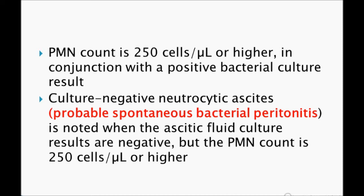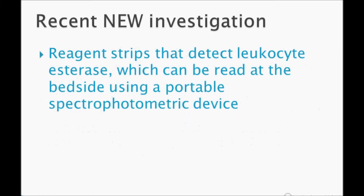There is a definition called 'probable spontaneous bacterial peritonitis,' in which ascitic fluid cultures are negative but the PMN count is 250 or higher. The diagnosis is probable SBP, but it does not differ much from confirmed SBP in terms of treatment.